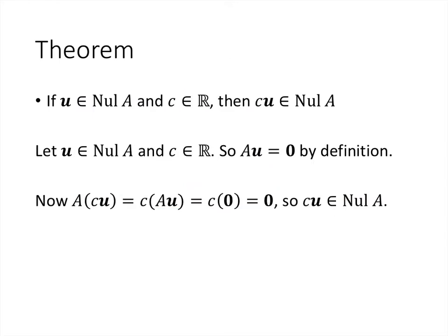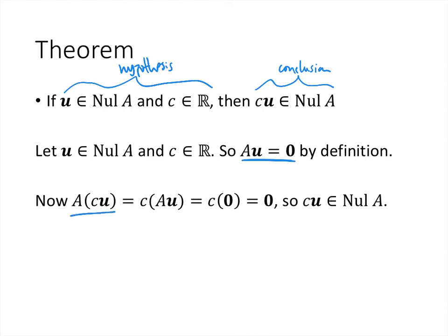Similarly, to show the null space is closed under scalar multiplication: if u is in the null space and c is a scalar, then A(cu) = c(Au) = c·0 = 0. With all four steps done, this proves that the null space of A really is a subspace of R^n.